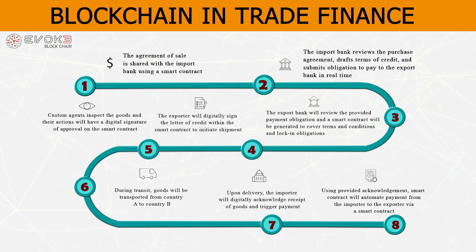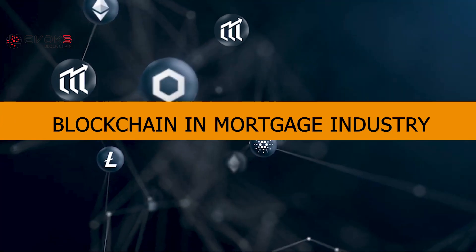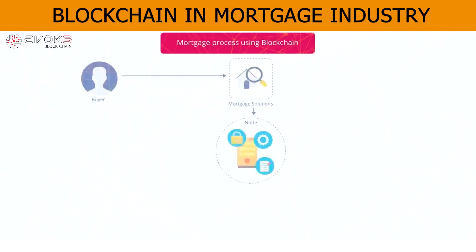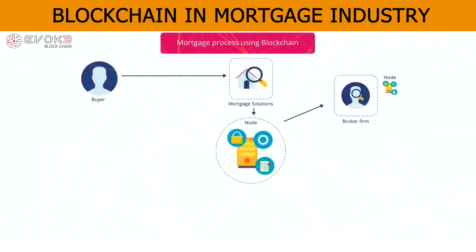Blockchain in the mortgage industry. Here is how blockchain can improve the system. The process flow for a more digital mortgage is as follows: buyers apply for a property valuation to a mortgage solution. The property valuation report is validated according to business rules using smart contracts relevant to the mortgage industry.